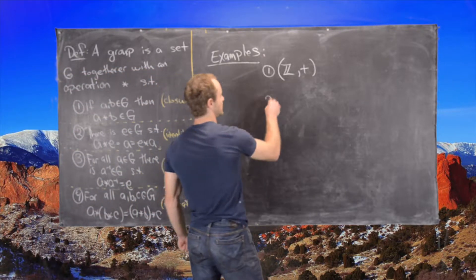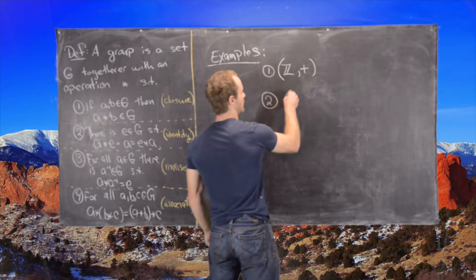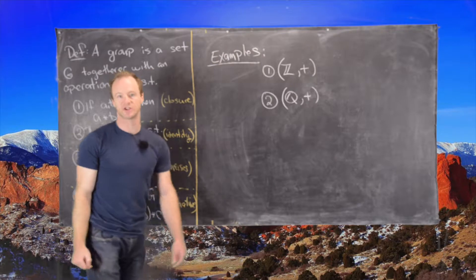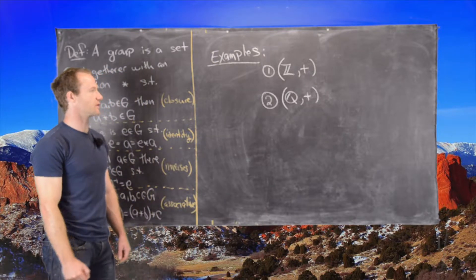Next we could have the rational numbers with addition, or the real numbers with addition, or the complex numbers with addition, or anything like that.